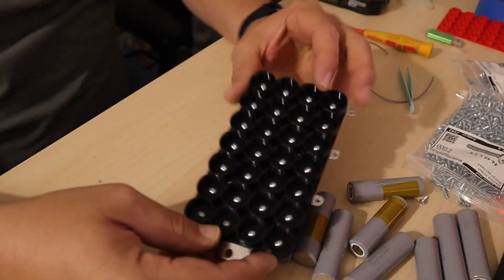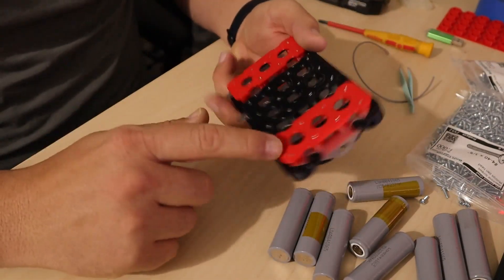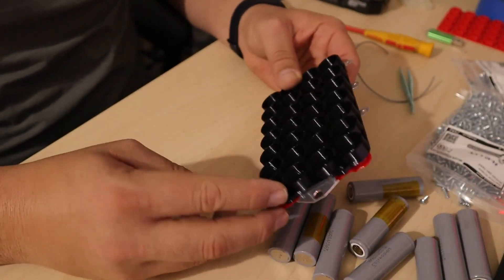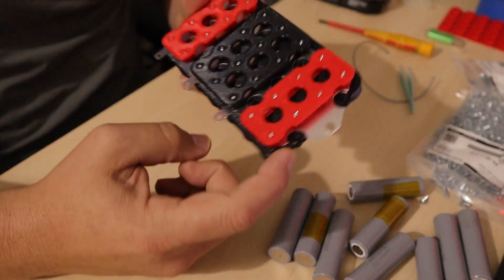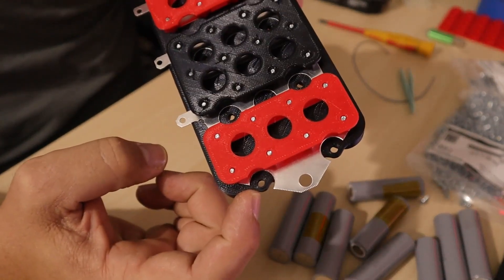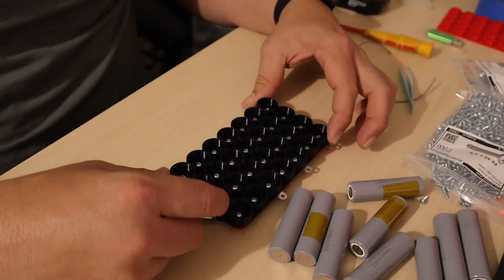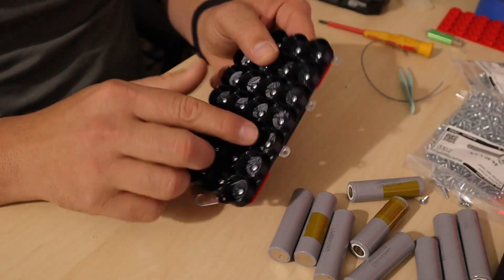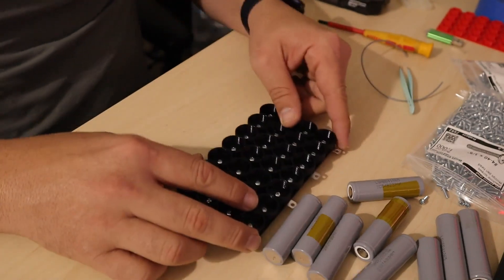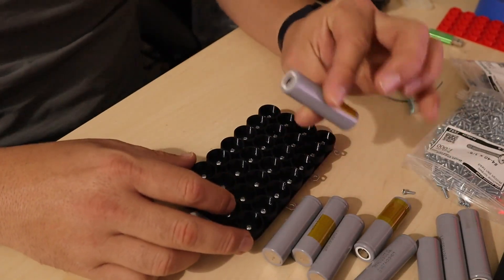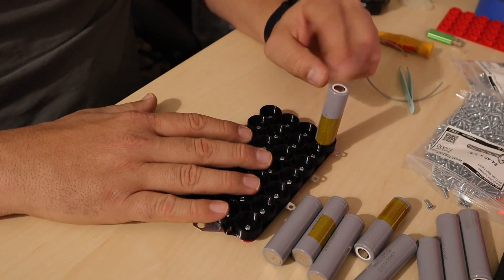You're going to take the first spacer that you assembled. Make sure that the terminal with the special design is going to be facing to your right. And the little tabs that are sticking out of the spacer, those are for the BMS—they need to be facing front.